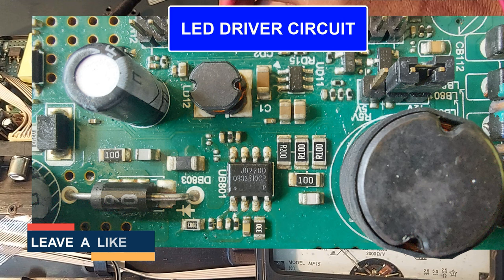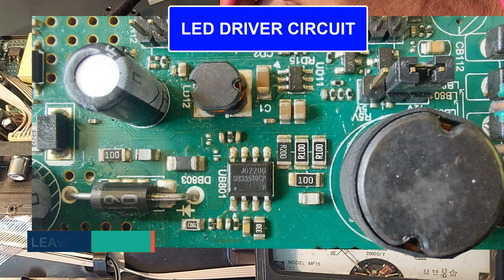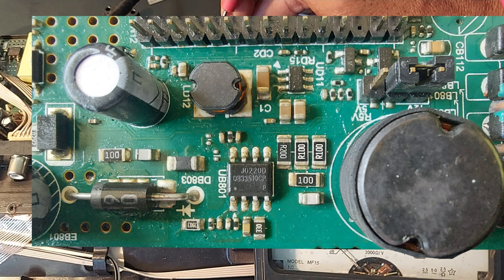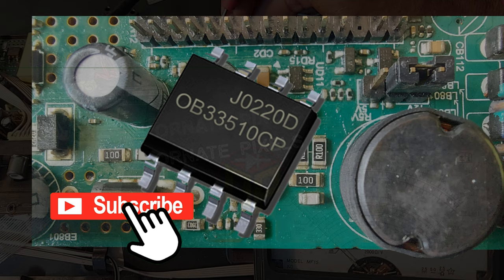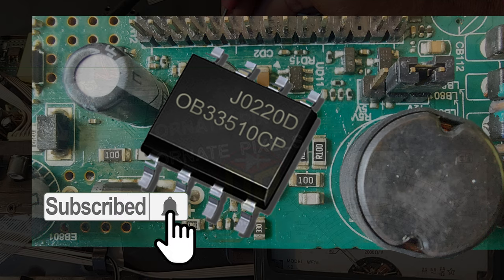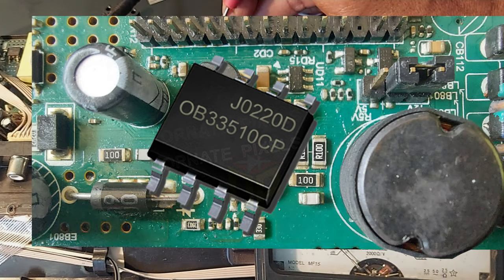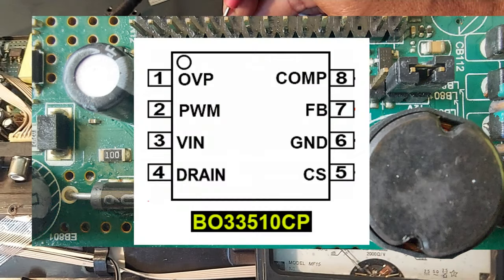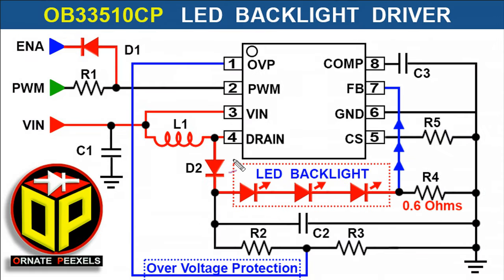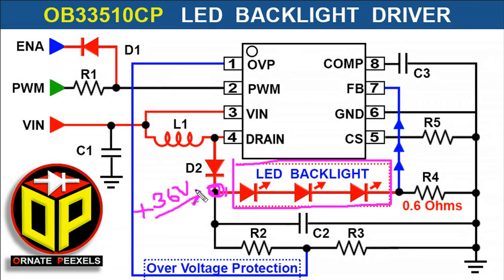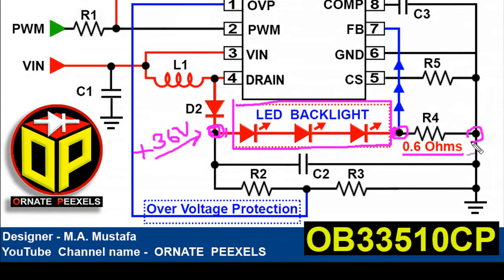We need to understand why overvoltage is output from the circuit. See IC number OB33510CP — this is its pin configuration. And these are the backlight LEDs located behind the panel. The anode terminal of this LED will have 36 volts, and the cathode is connected to negative through a 0.6 ohm resistor.